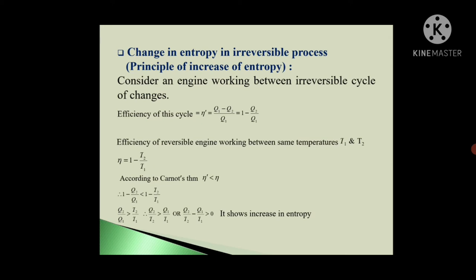From this we get Q2/Q1 > T2/T1, so Q2/T2 > Q1/T1, or Q2/T2 - Q1/T1 > 0. This quantity is positive, showing an increase of entropy in this irreversible process.